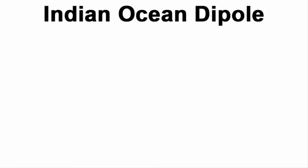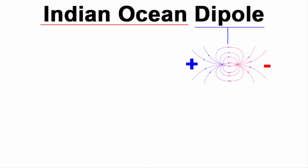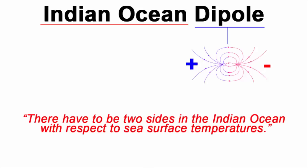From the name, you can easily figure out that this phenomenon occurs in the Indian Ocean. The word dipole is used in physics, which means two ends that have opposite sides. For example, a magnet has two opposite sides — the North Pole and the South Pole — so these two sides are called a dipole. When you look at the term Indian Ocean Dipole, it means there have to be two sides in the Indian Ocean.